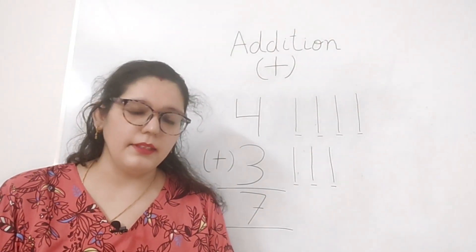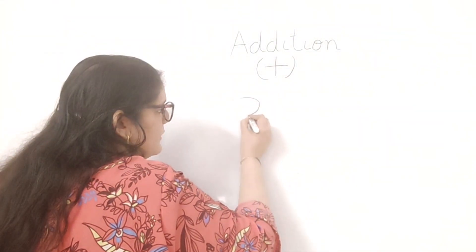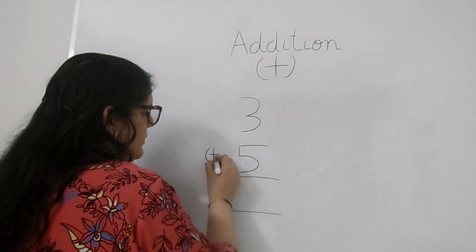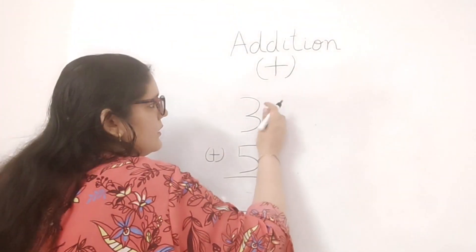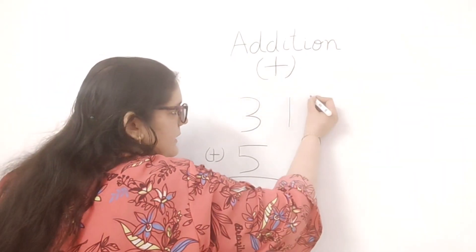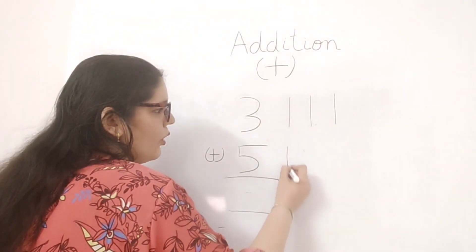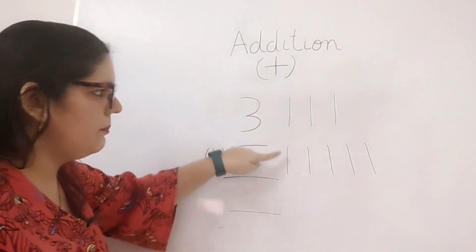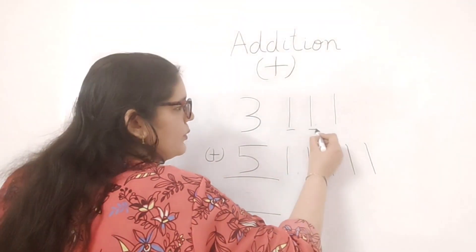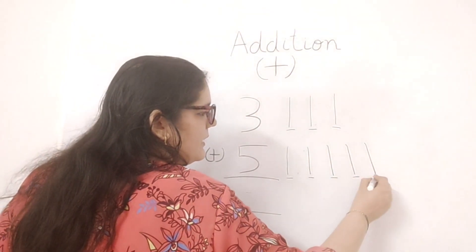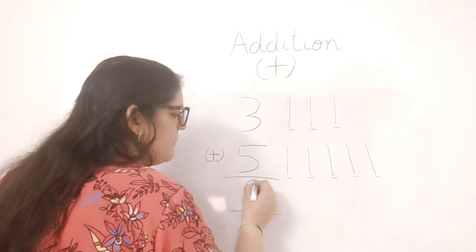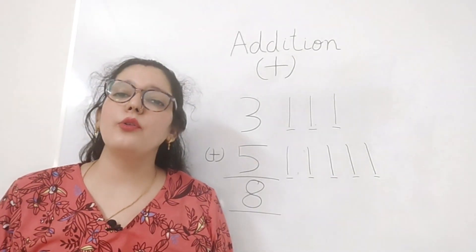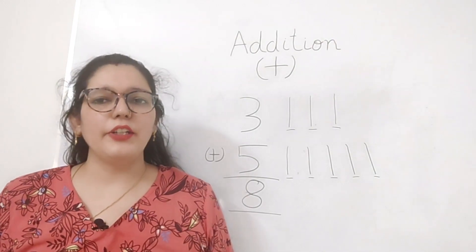Let's have another example. What if I want to add three and five? I will draw three lines and five lines. Counting them all: one, two, three, four, five, six, seven, eight — the answer will be eight. I hope now you know how to do addition for simple digits. Thank you for watching.